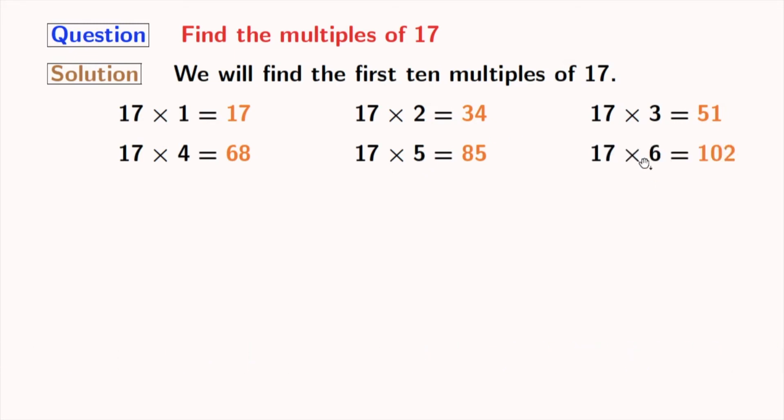Multiplication of 17 and 6 gives us 102. If we multiply 17 with 7, we get 119.